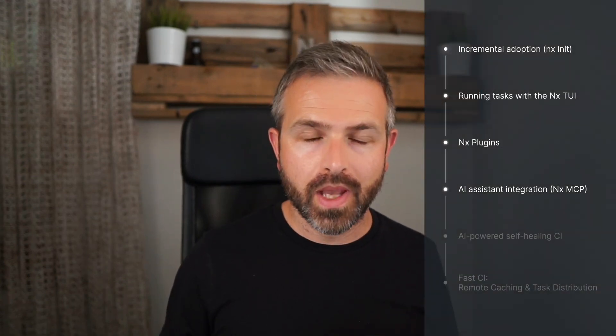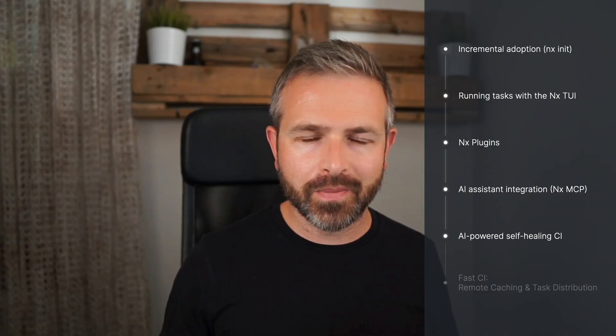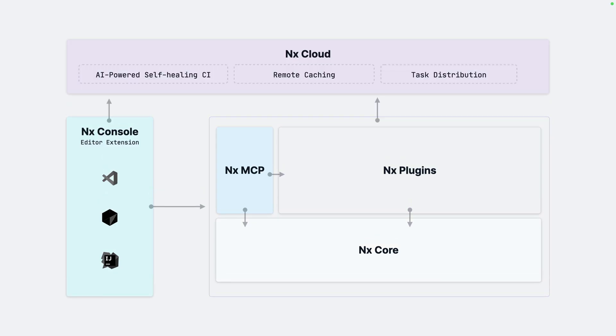We're now all set up locally, but what about CI? That's when things usually start to get messy — having to babysit that PR, rerunning failed tests, waiting for that flaky test to finally pass. There's a lot of wasted time, and this is what I call time to green: the moment until your PR is finally ready for review. NX directly integrates with NX Cloud, which provides features that help you reduce time to green — things like AI-powered self-healing, which automatically fixes your PRs, but also remote caching and distributed task execution for faster CI runs.